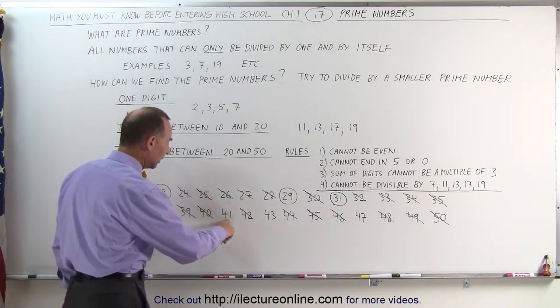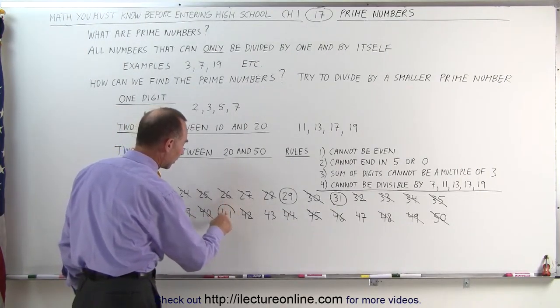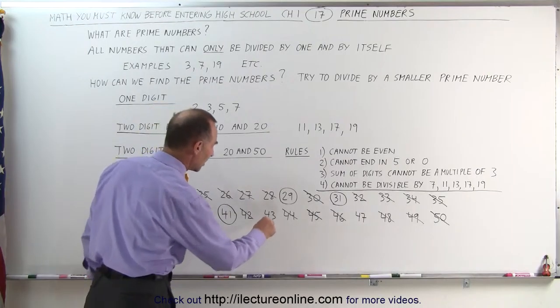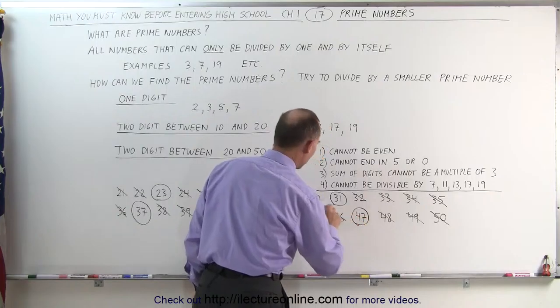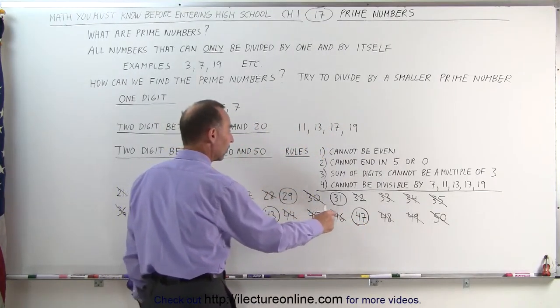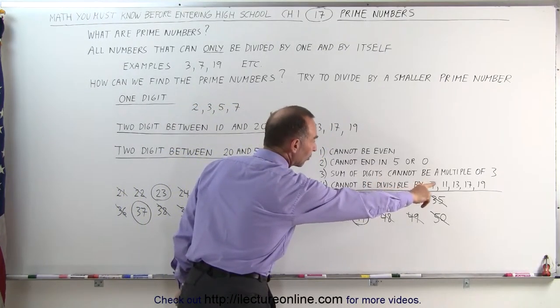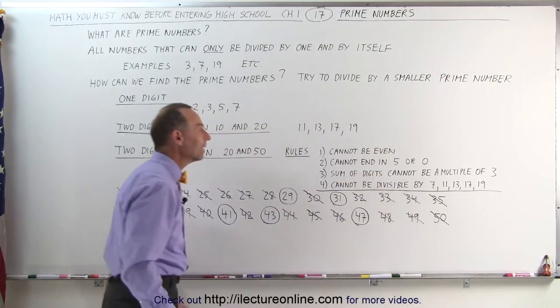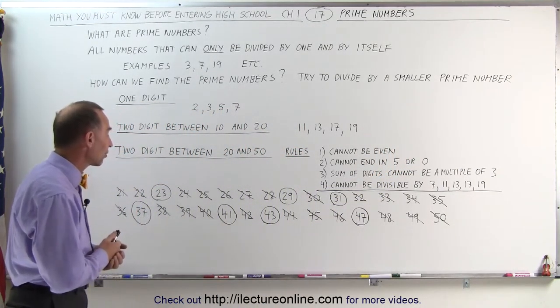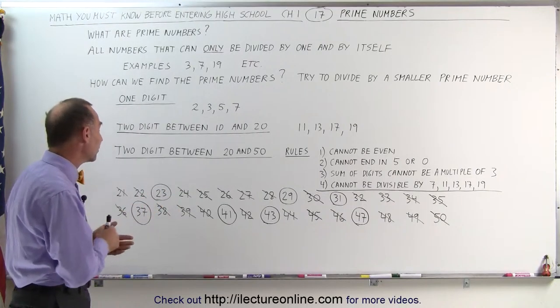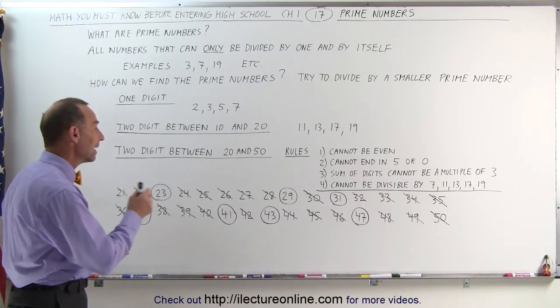And the number 41, that also falls in that category. The number 43 also falls in that category. And finally, the number 47. You'll find that you cannot divide any of those numbers circled by any of the numbers listed. They do not end in a 0 or 5. They're not even. And they cannot be divided by 3.